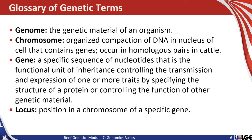One good step for understanding genomics in beef cattle is to have a working knowledge of some genetics terms. So what is a genome? A genome is simply the genetic material of an organism in its entirety. A chromosome is simply an organized compaction of DNA in the nucleus of a cell that contains genes. They occur in homologous pairs; beef cattle have 30 pairs of chromosomes. A gene is a specific sequence of nucleotides that is a functional unit of inheritance and controls the transmission and expression of one or more traits by specifying the structure of a protein or controlling the function of other genetic material. A locus is simply a position on a chromosome of a specific gene.